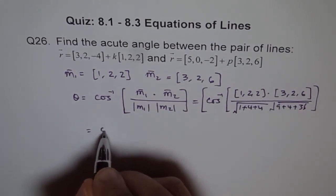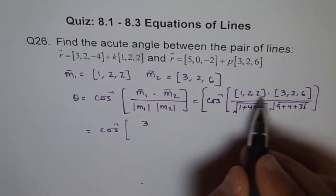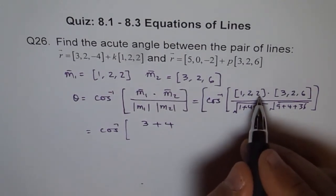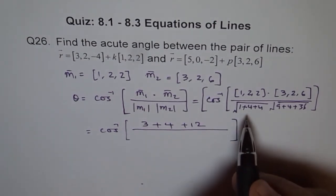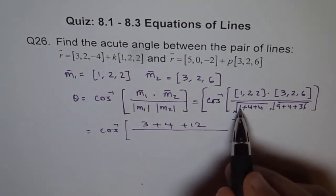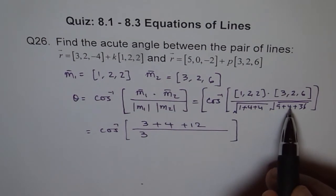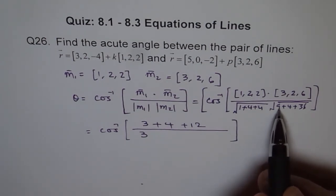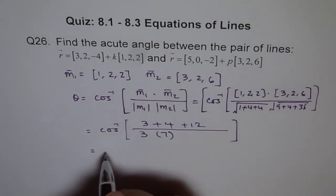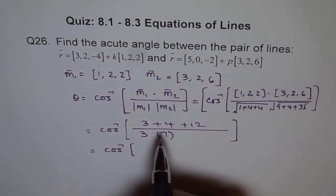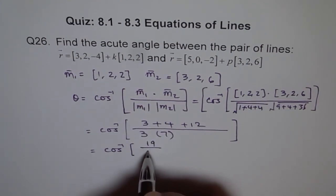That gives us cos inverse of 1 times 3, which is 3, plus 2 times 2 is 4, plus 2 times 6 is 12. Over: 1 plus 4 plus 4 is 9, square root is 3; and 9 plus 4 plus 36 is 49, square root is 7. So we get cos inverse of 3 plus 4 plus 12 equals 19, over 3 times 7 which is 21.